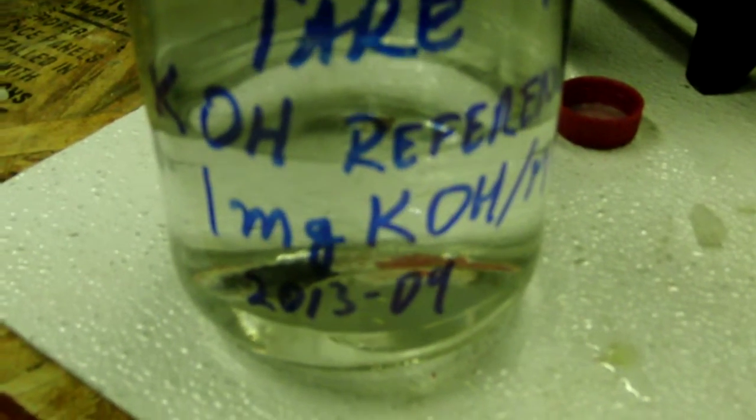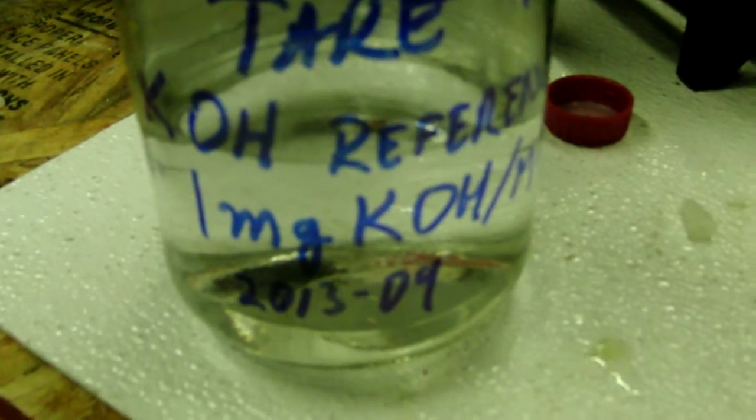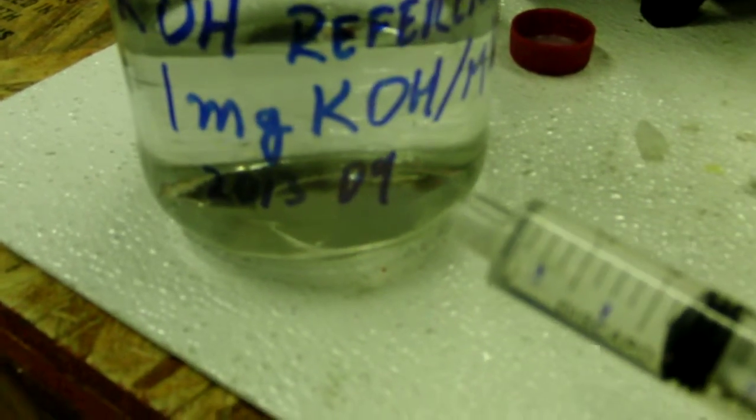Okay, doing a titration. I have a reference solution with one milligram per milliliter of potassium hydroxide. I've got an indicator made with curry.